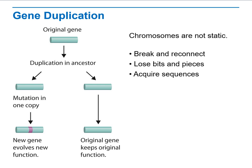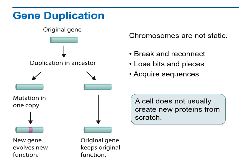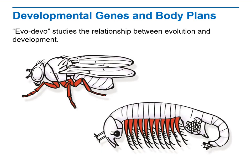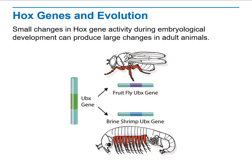These events determine what the new generation looks like. A cell does not usually create new proteins from scratch — they must come from a pre-existing source. Studies on hox genes focus on the relationship between evolution and development within the same genes over time. Only a slightly small change in hox genes, occurring during the embryological stages of development, while the organism is in an embryonic state, can produce a large change in the adult animal.